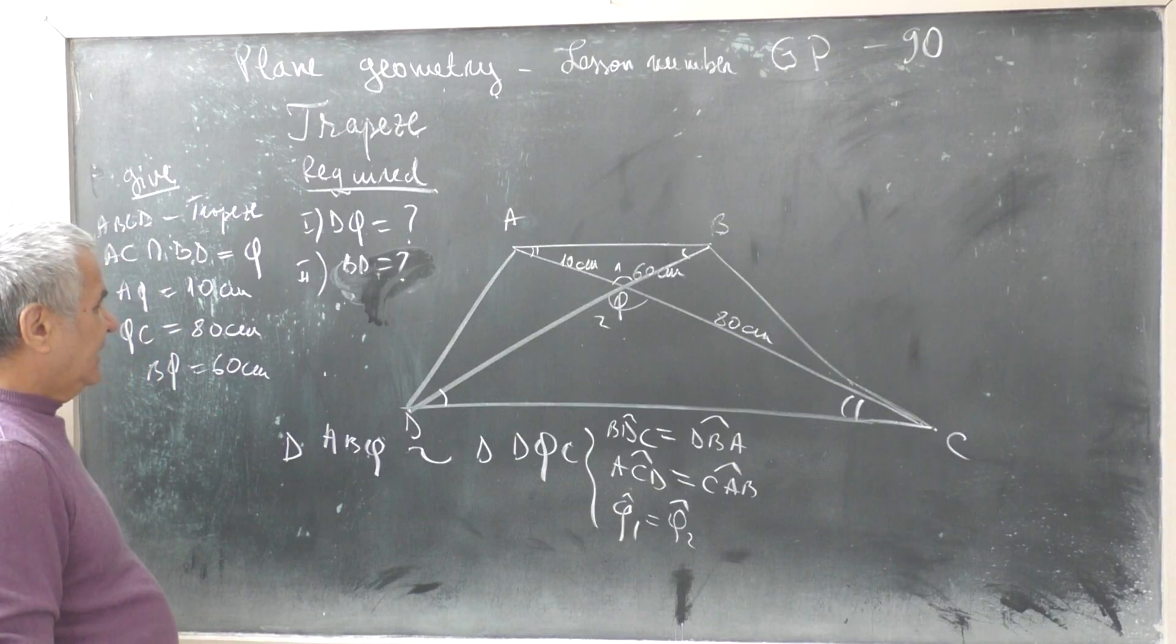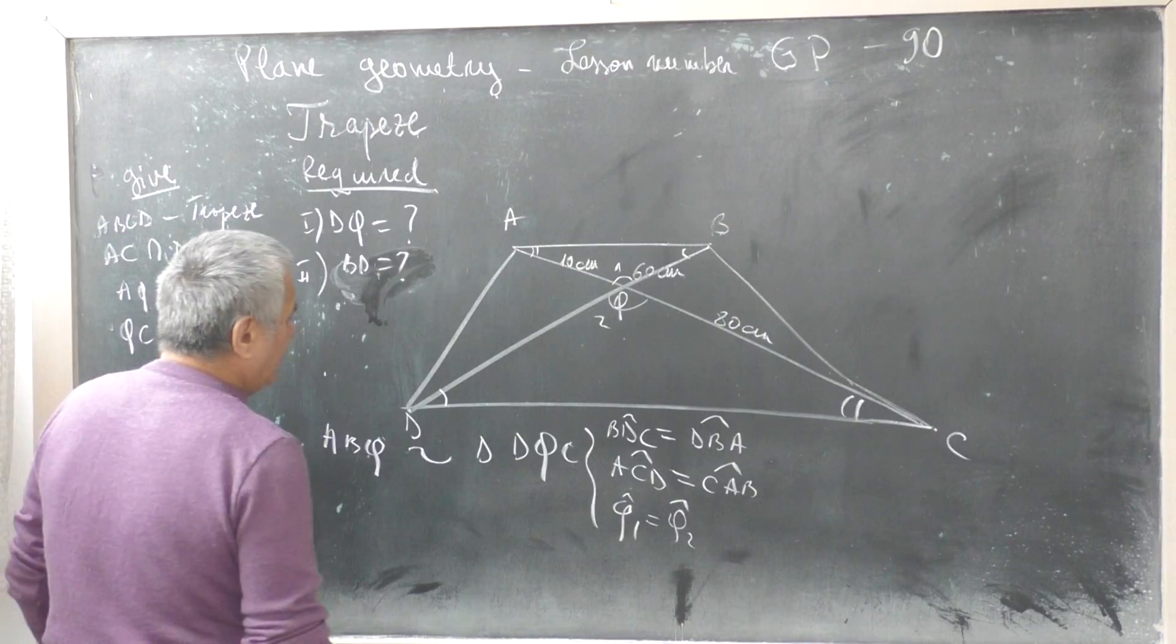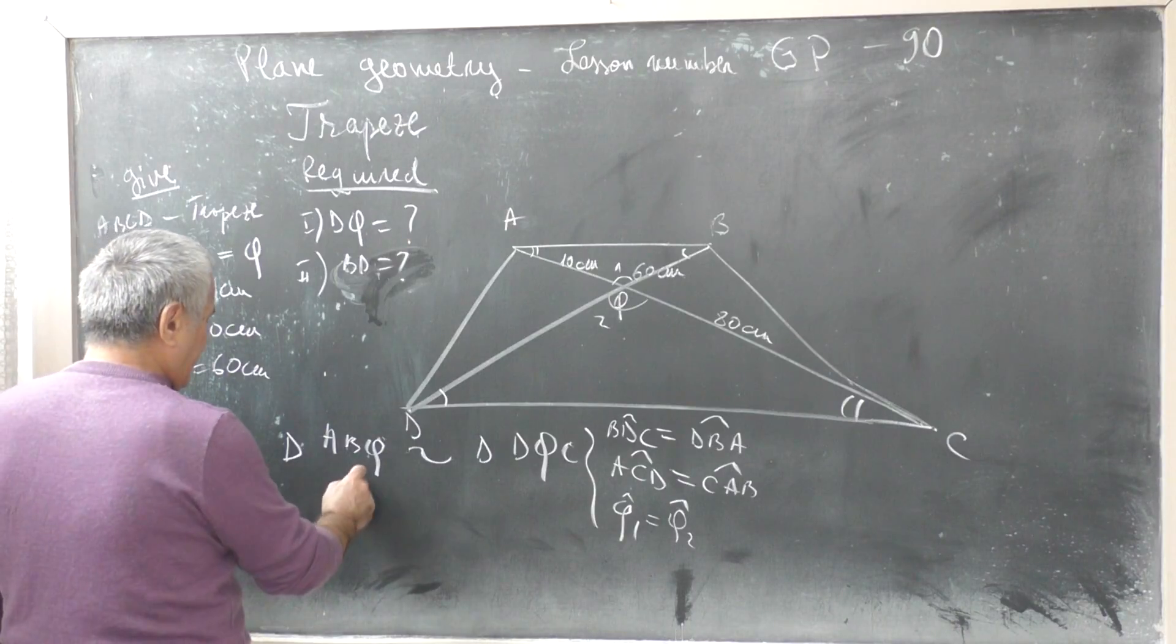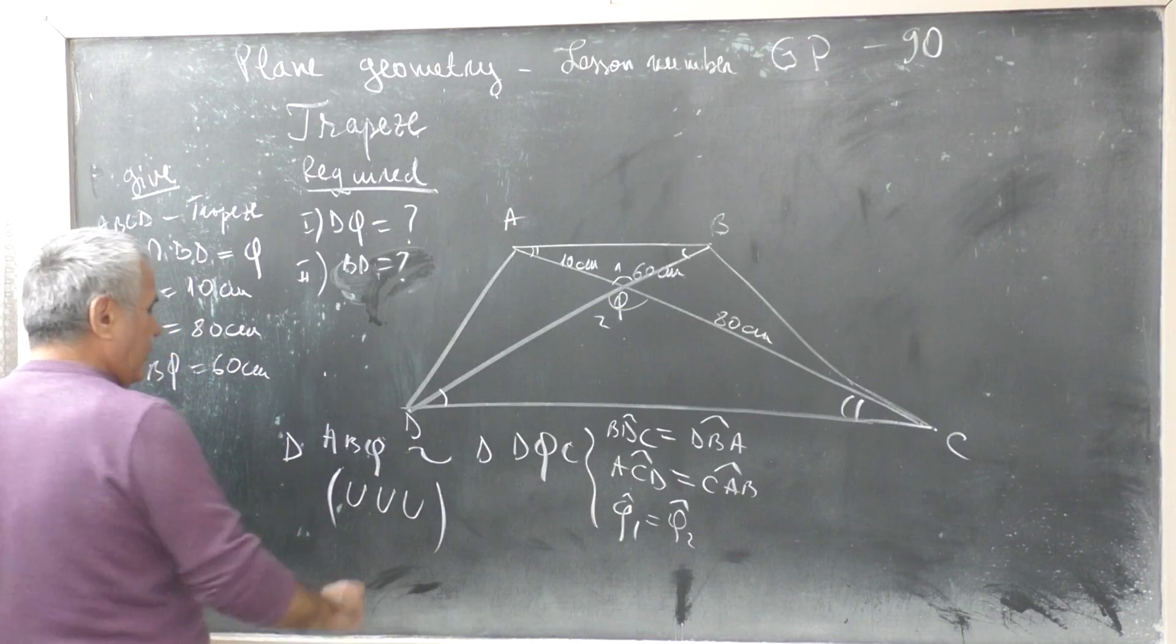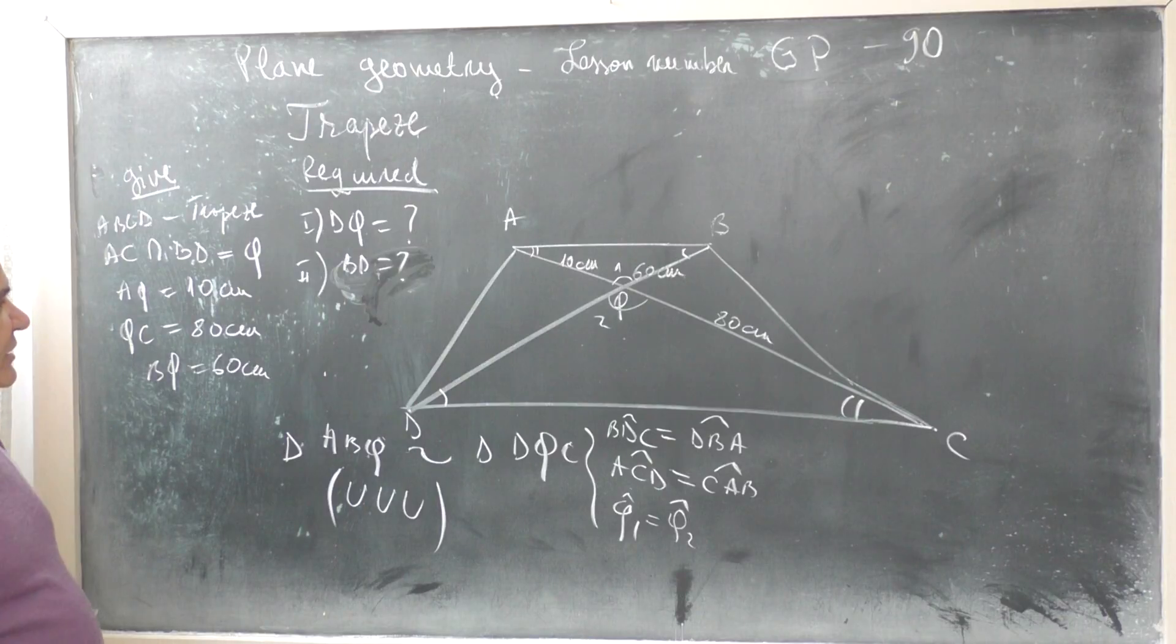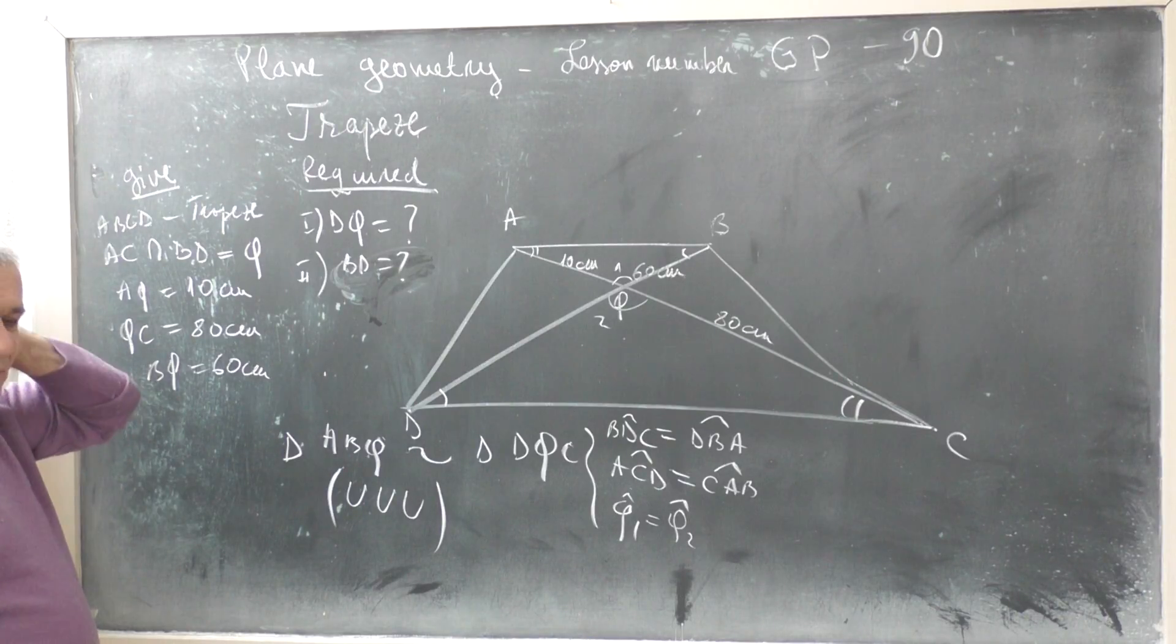Triangle ABQ similar to triangle DQC, all angles equal, angle equal corresponding.